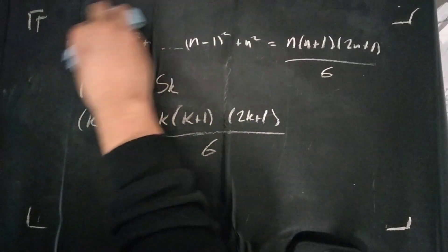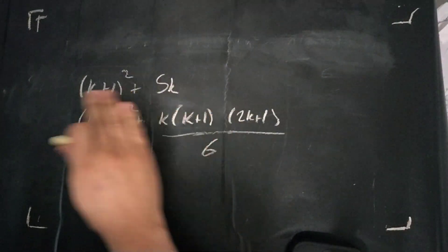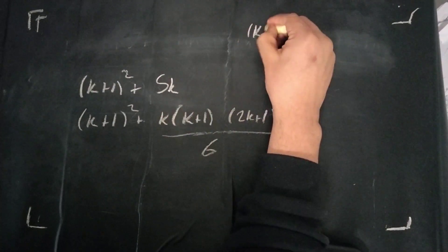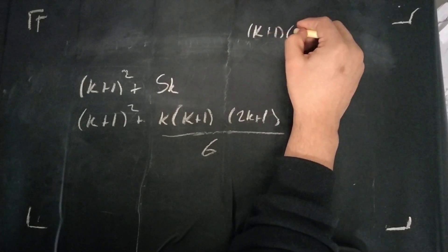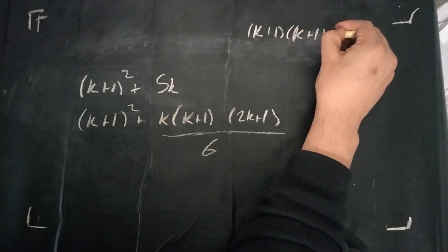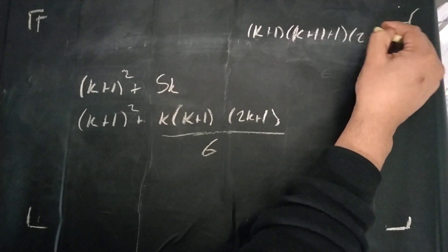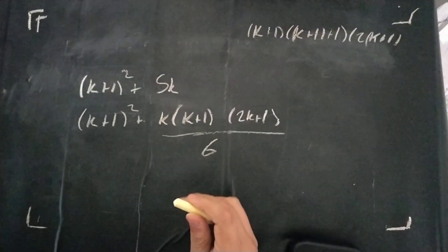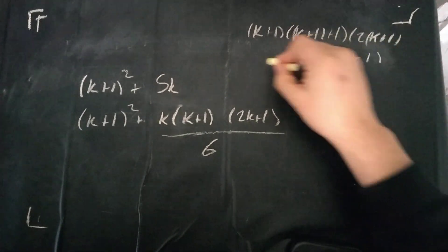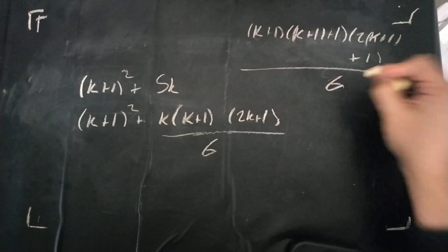And, just for reference, just so that we have it up here, we want this, we want to manipulate this over here so that we end up with this form. Just to make it easier, plus 1, 2k plus 1, oops, is that, yeah, that's a bit outside the frame. I'll write it down here. Not the nicest, but there we go, over 6.